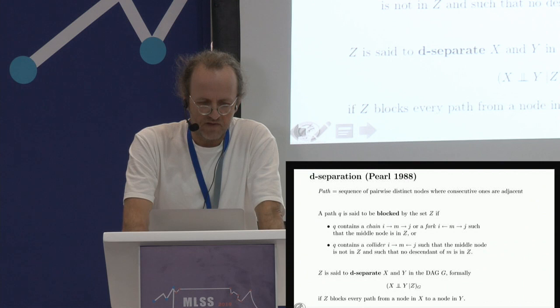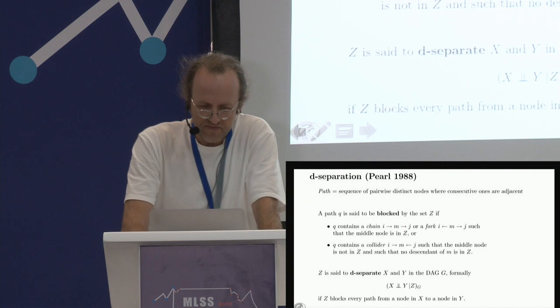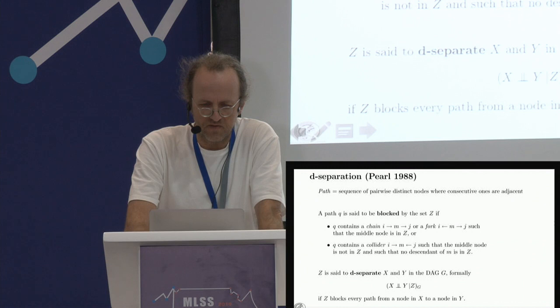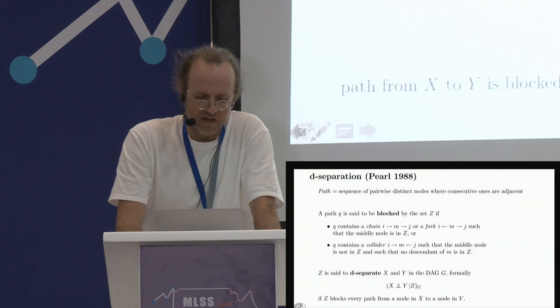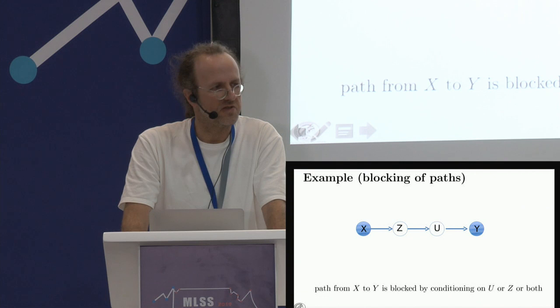There are two ways a path can be blocked, and at least one must hold. The first option is that there is a chain — where arrows go in the same direction — or a fork, such that the middle node M is in the blocking set Z. For example, X and Y will be blocked by taking either Z or U into the conditioning set, because this is a chain and the middle node is in Z. The intuition: information from the noise variable of X cannot flow to Y if you condition on any node in between.